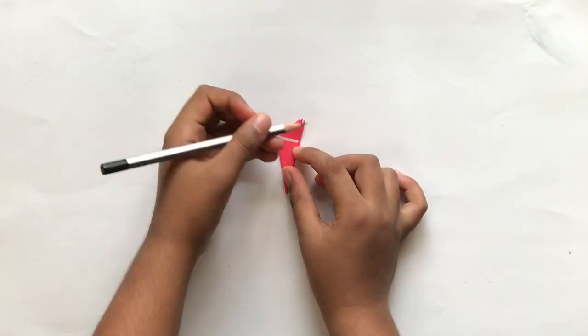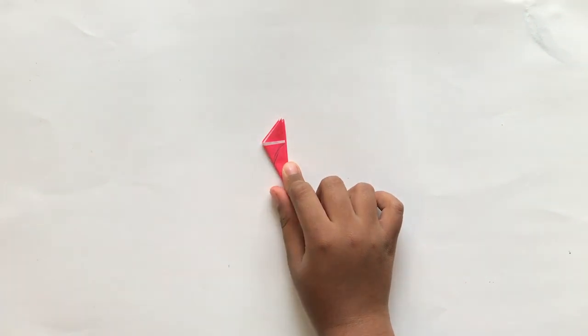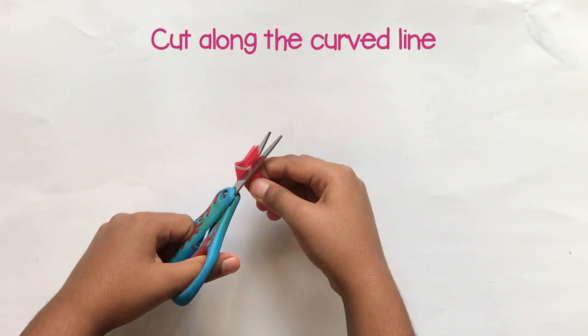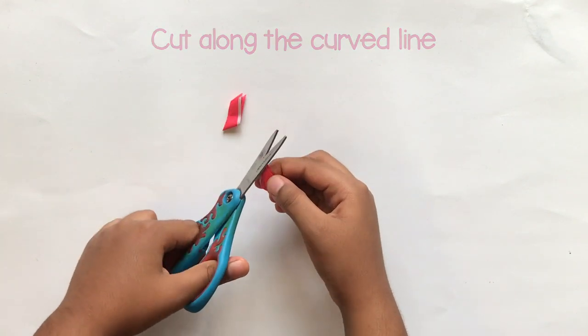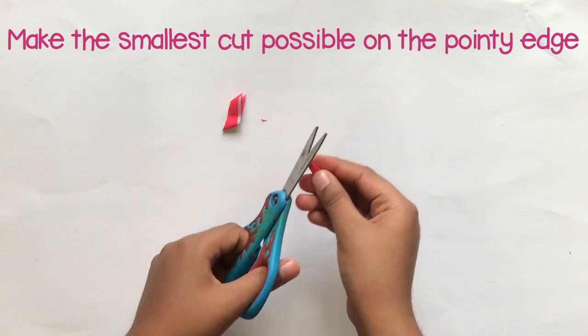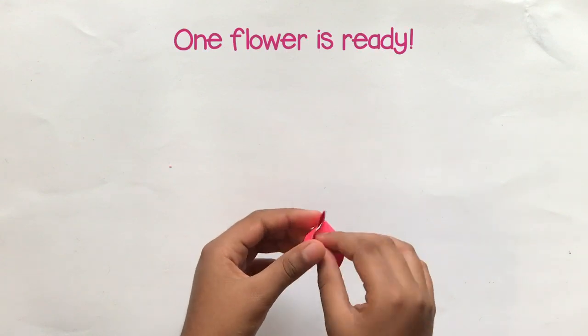Now, I am just gonna draw this for the petals. And I am gonna take my scissors and cut. I am gonna cut the tiniest way I can. Now, I am just gonna open and show you how it looks.